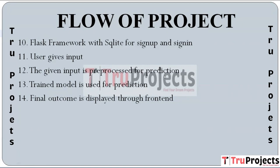The given input is pre-processed for prediction, involving tasks like cleaning, formatting, or transforming the input into a suitable format. Then the trained model is used for prediction — employing the previously trained machine learning models to make predictions based on the pre-processed user input. Finally, the outcome is displayed through the front end, presenting the results to the user through a user-friendly interface such as a web page, mobile app, or another platform.